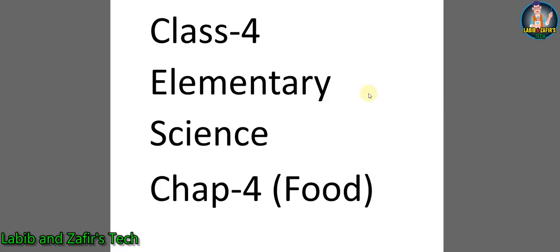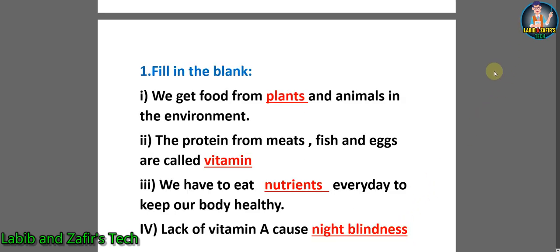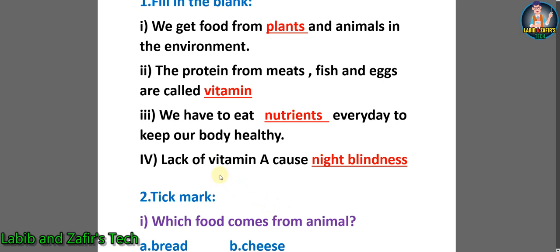Class 4, Elementary Science, Chapter 4: Food. We will go through some fill-in-the-blanks. Number 1: we get food from plants and animals in the environment. Number 2: the protein from meats, fish and eggs are called animal protein. Number 3: we have to eat nutrients every day to keep our body healthy. Number 4: lack of vitamin A causes night blindness.